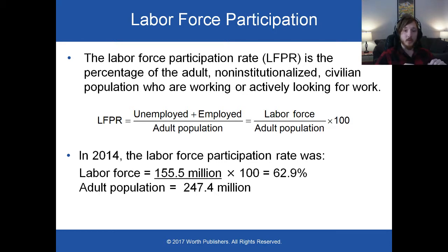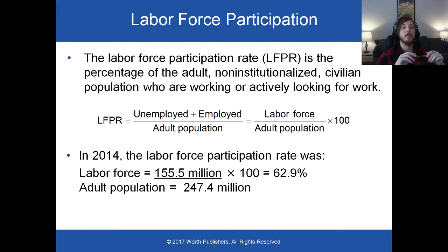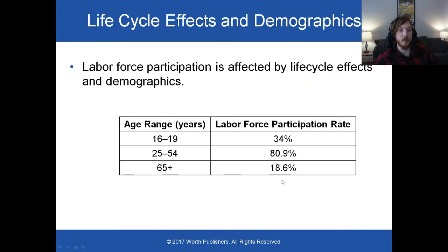Earlier we defined the labor force as adults, non-institutionalized civilians, either working (employed) or not working but looking for work (unemployed). To calculate the labor force participation rate — the size of the labor force relative to the adult population — we add unemployment plus employment to get the labor force, then divide by the adult population. Earlier we said the labor force was 155.5 million. If the adult population is 247.4 million, then our labor force participation rate is 62.9%.